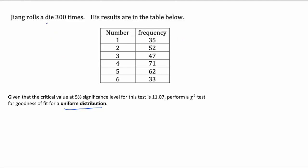So when you're rolling a die, all these probabilities should be the same. It should be the same probability of a 1, 2, 3, 4, 5, or 6, and that probability should be 1/6.